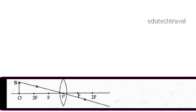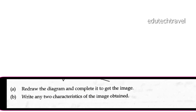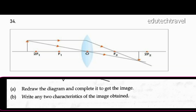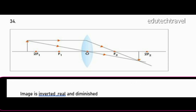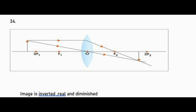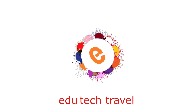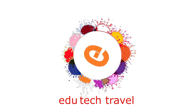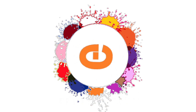Write any two characteristics of the image obtained. The position of image is between F and 2F; images are real and diminished. The session is now finished.